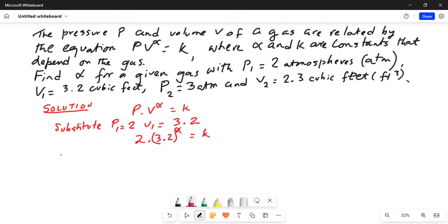We also substitute p2 equal to 3, v2 equal to 2.3. So we get 3 times 2.3 exponent alpha equals k. This is equation 1 and this is equation 2.